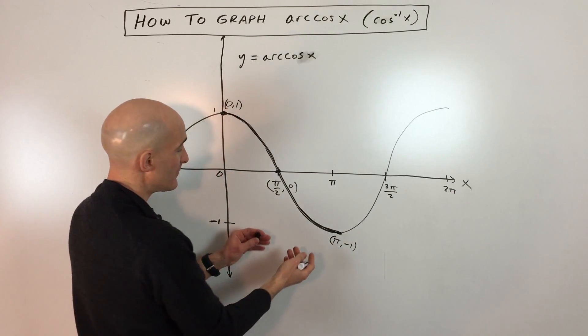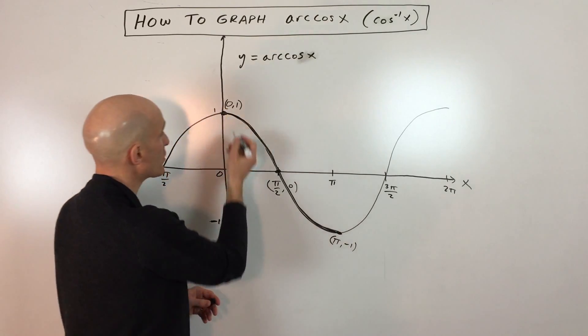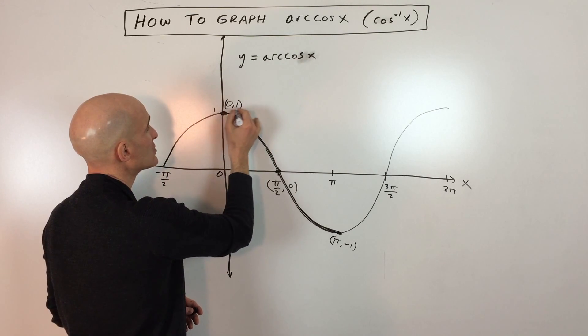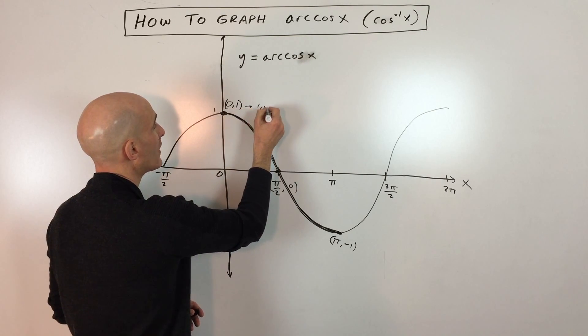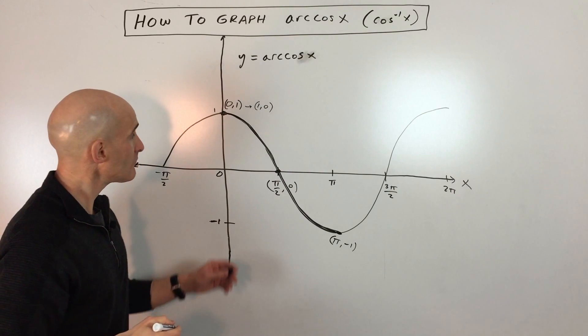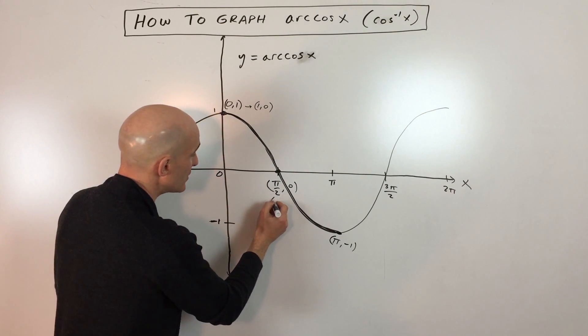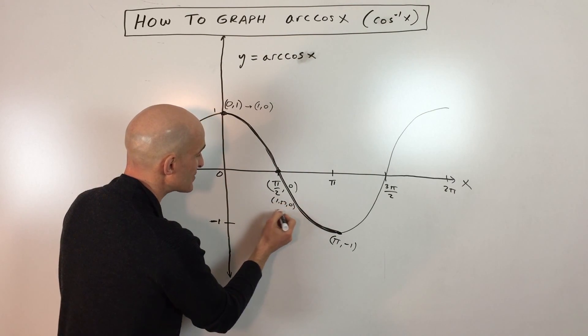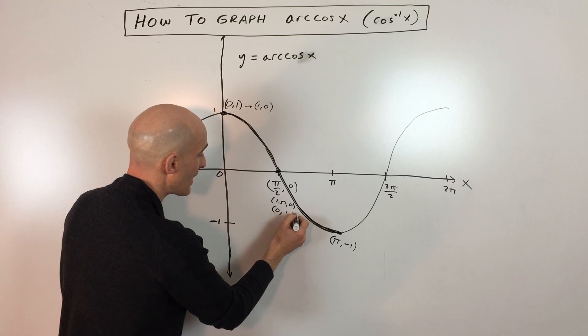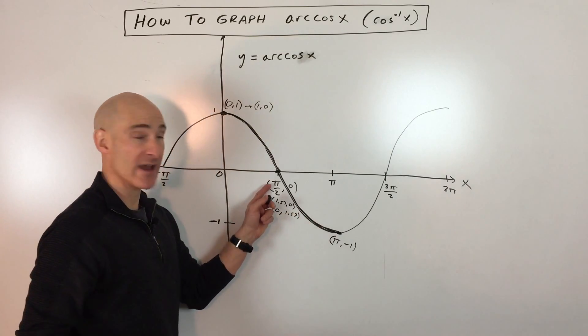So what we're going to do now is we're going to switch the x and the y coordinates. So if we do that, this point here, zero one is now going to be one comma zero, right? So pi over two is 1.57 comma zero. So when we switch that, it's going to be zero comma 1.57, because remember pi is 3.14.